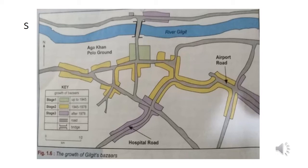In stage one there is a little growth just across the river. Then roads move parallel to River Gilgit and there is growth on the east and west sides of the road. The third stage includes the hospital road and airport road — because of more traffic, tourism, and commuting of people in this area, bazaars are also growing there.